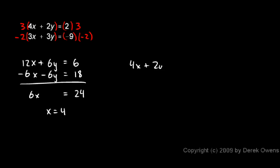4x plus 2y equals 2. And I'm just going to put in the value of 4 right there. So this is 4 times 4 plus 2y equals 2. And this is easy to solve. 16 plus 2y equals 2. We subtract 16 from each side, and we get 2y equals negative 14. So y equals negative 7.